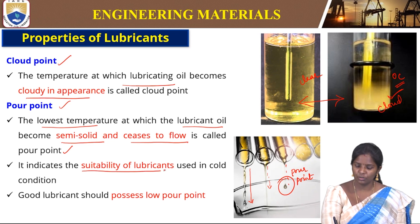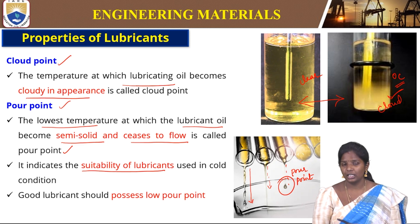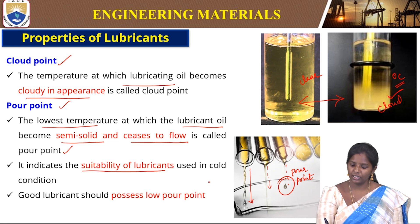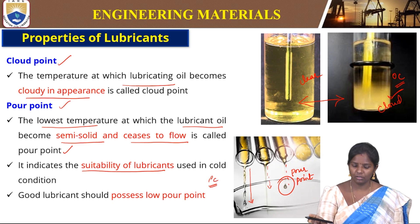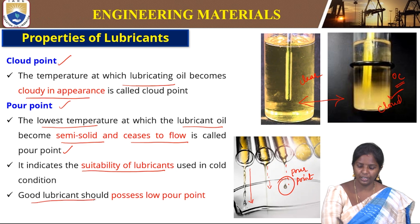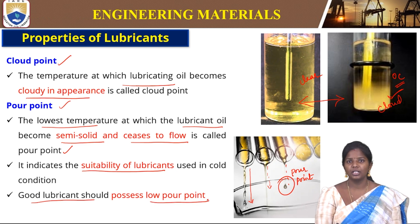The pour point indicates the suitability of lubricants for use in cold conditions. For example, if the pour point is 1°C, the lubricant cannot be used at that temperature. A good lubricant should possess a lower pour point — the lower the pour point, the more widely the lubricant can be used.